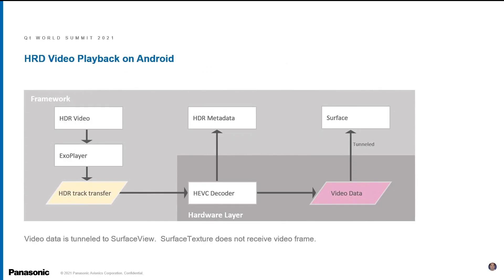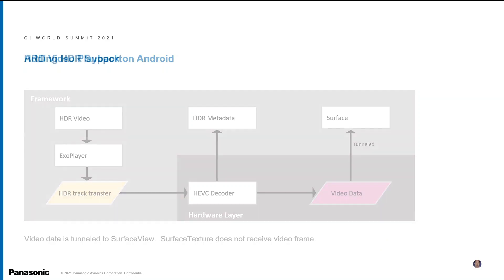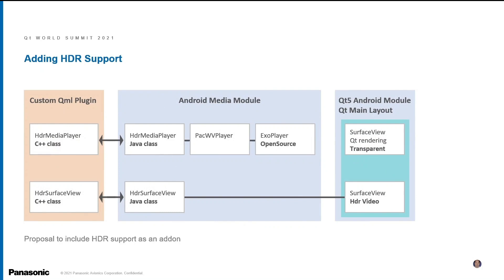In this slide we look at how we can implement HDR playback on Android. We decided to use ExoPlayer, which is an open source project from Google that facilitates video streaming and metadata extraction. HDR track data is sent to the HEVC decoder, and video data is decoded and tunneled directly to the SurfaceView. This is all done at the hardware layer, which is why the SurfaceTexture used by the Qt Multimedia module cannot receive the video frame.